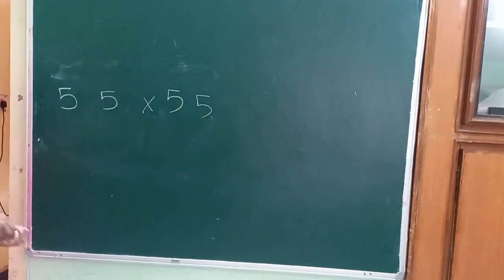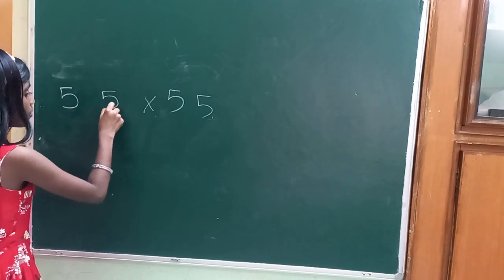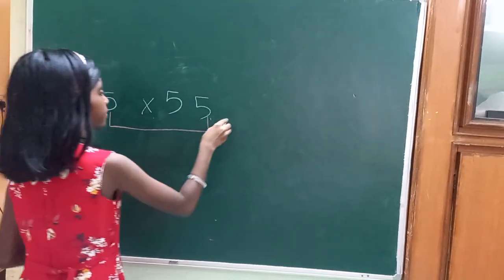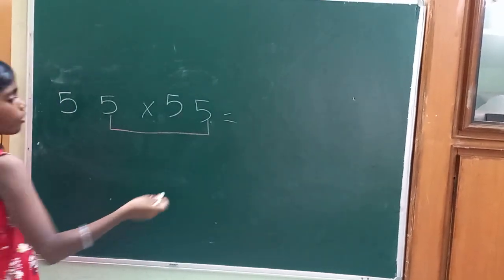Now what you're going to do is multiply these two digits. Five multiplied by five will be of course 25.